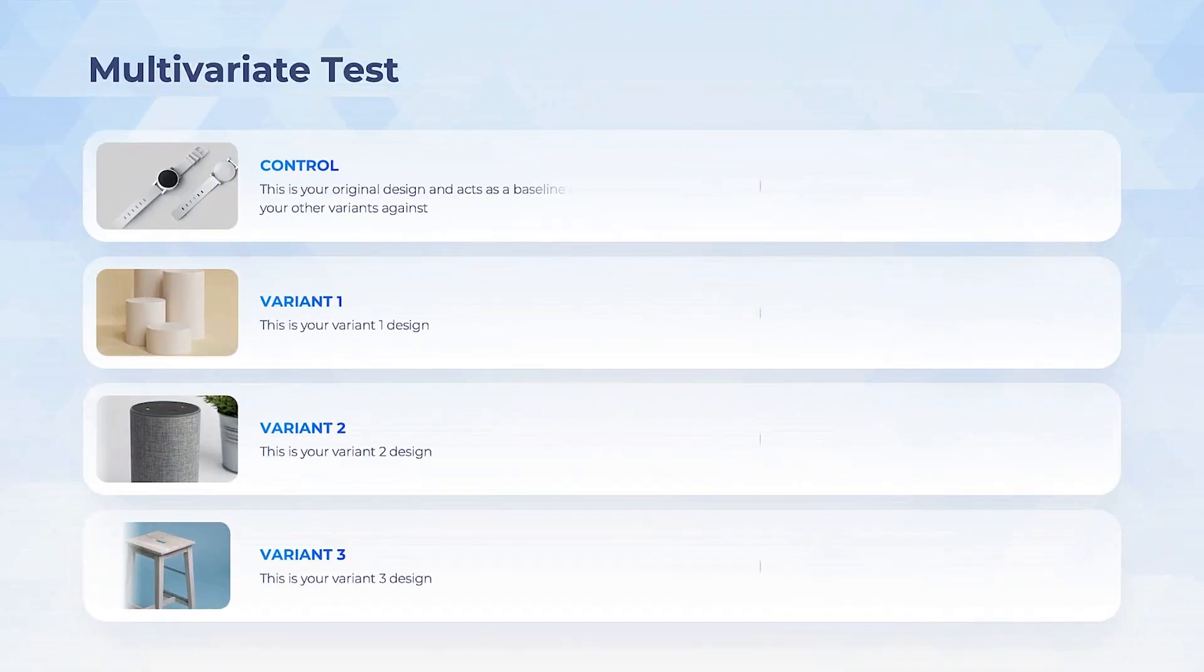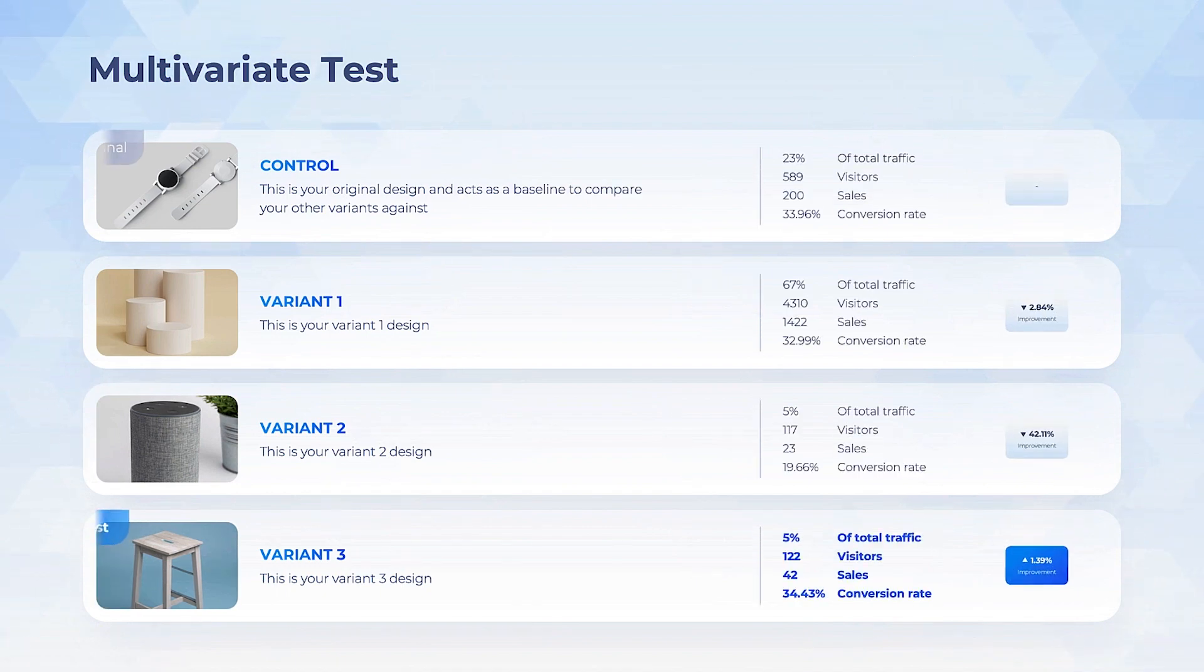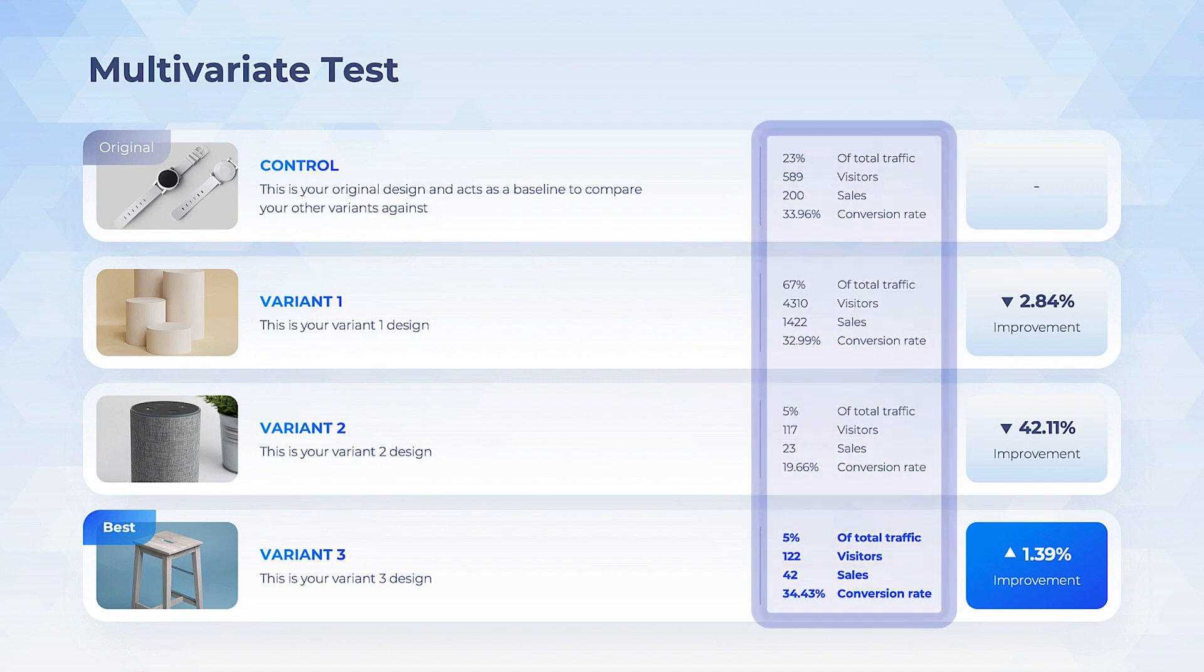Sometimes it pays to test multiple solutions at once. Use the multivariate test tool to neatly structure the performance of different product iterations. Before starting the experiment, make sure to identify what metrics you want to measure. These are the numbers that will determine which idea is the winner.